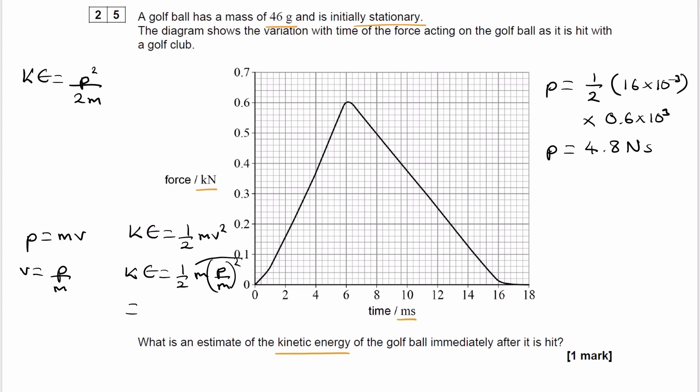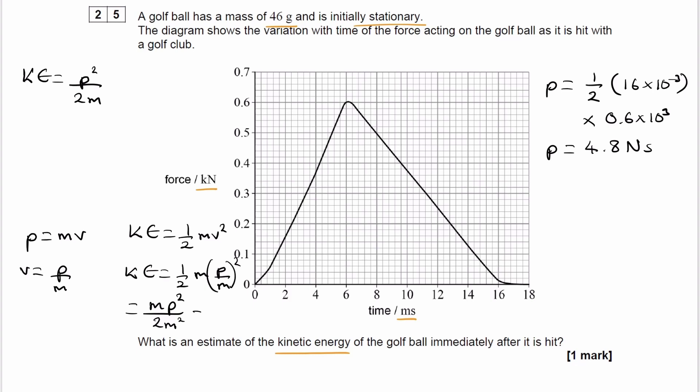Just looking at the numerator, m times p squared, the denominator 2m squared, and that simplifies to p squared over 2m.